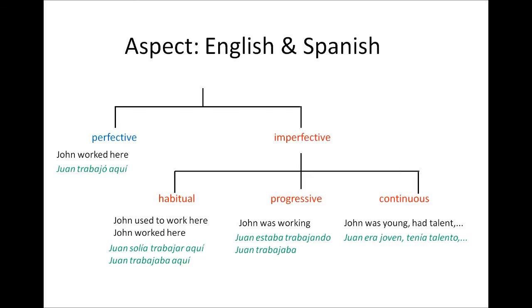The meaning is 'John used to do X.' John used to work here — Juan solía trabajar aquí. In Spanish, when I can say Juan solía trabajar aquí, I can use the imperfect. I can say Juan trabajaba aquí without changing meaning. The same applies to the progressive.